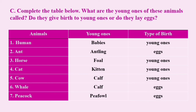Number 4: Cat — young one's name: kitten, type of birth: young ones. Number 5: Cow — young one's name: calf, type of birth: young ones. Number 6: young one's name: calf, type of birth: eggs. Number 7: young one's name: piglet, type of birth: eggs.